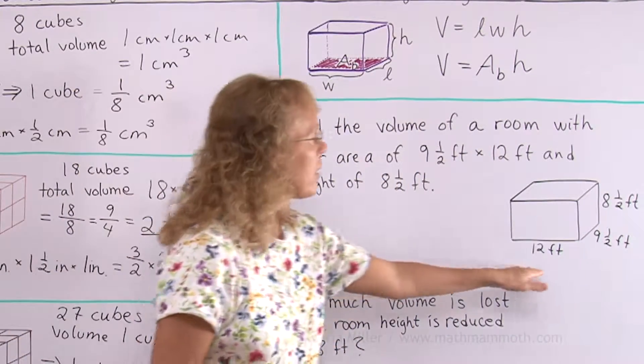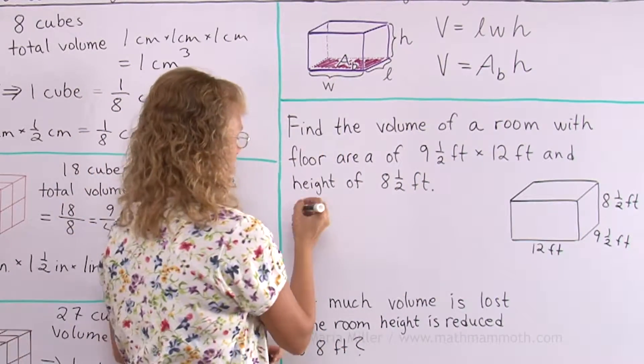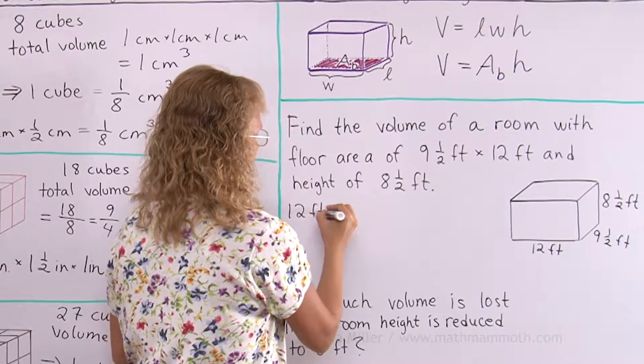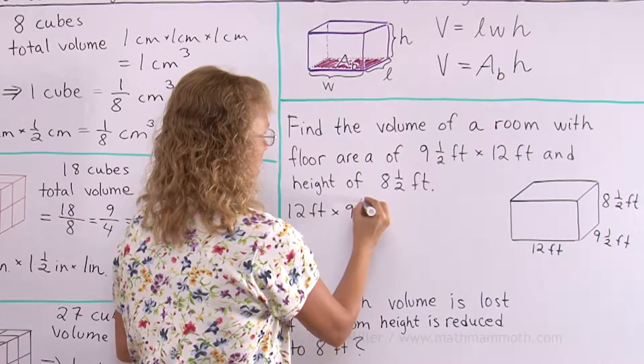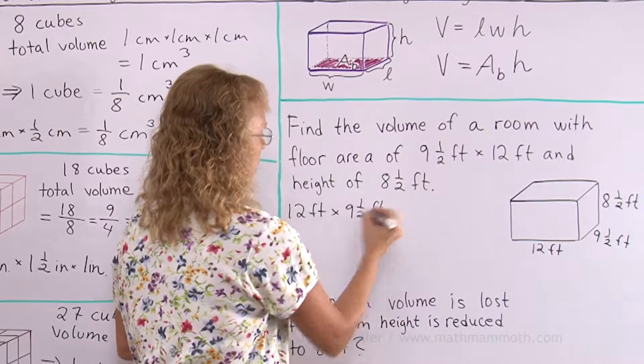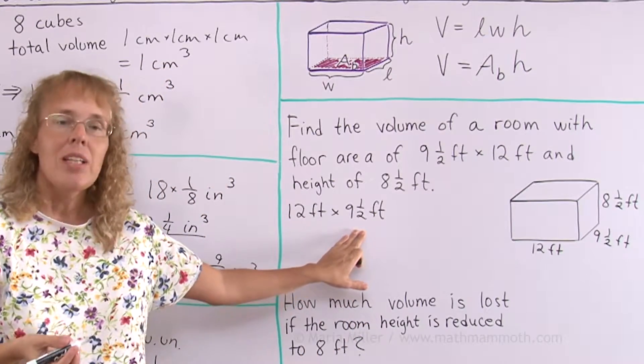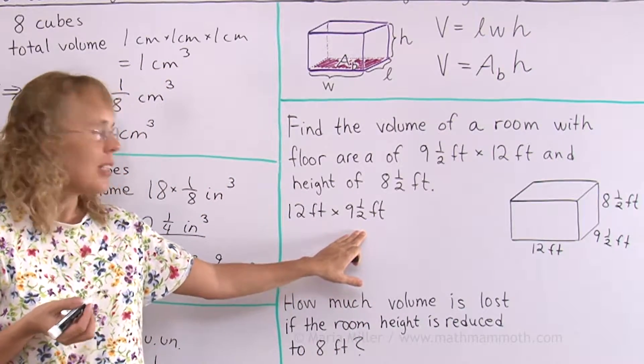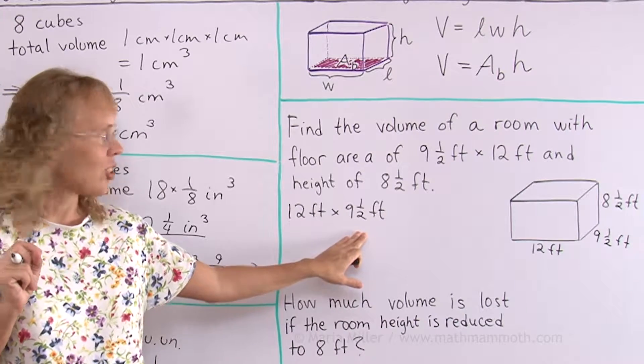Let me first multiply to find the floor area here. 12 feet times 9½ feet. Here is a mixed number. So to multiply with it, you would convert that into a fraction first. 9 times 2 is 18 plus 1 is 19.